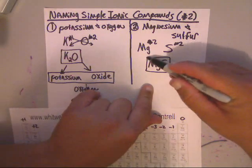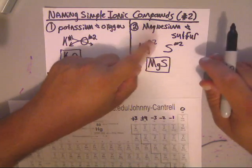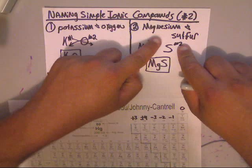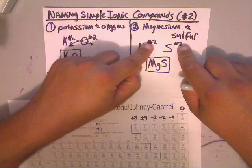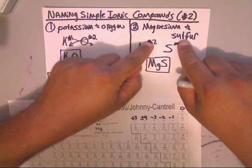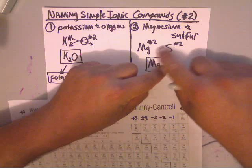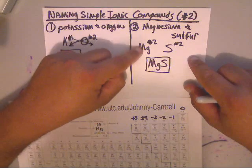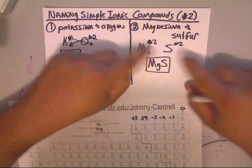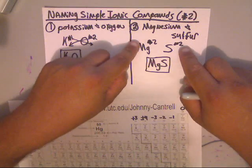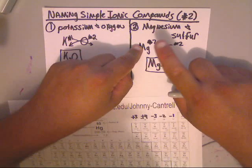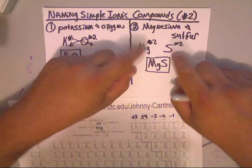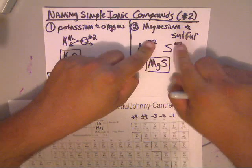Meaning this. If magnesium did have a positive 4 charge, and this was a 4, and this was a 2, then this would change to a 2, and this would change to a 1. So we'd bring a 2 down here, and bring a 1 down behind there. But we don't write ones. So if this was Mg4S2, you'd see Mg2S1.